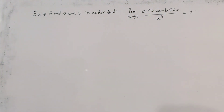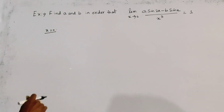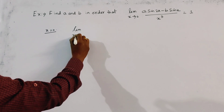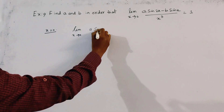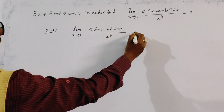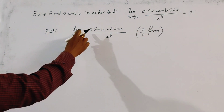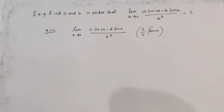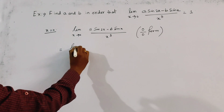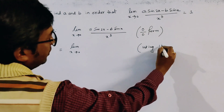If we put x equal to 0 in the numerator and denominator, the limit of (A sin 2x minus B sin x) divided by x cubed is of the form 0 by 0. Both numerator and denominator equal 0 at x = 0. So we apply L'Hôpital's rule.